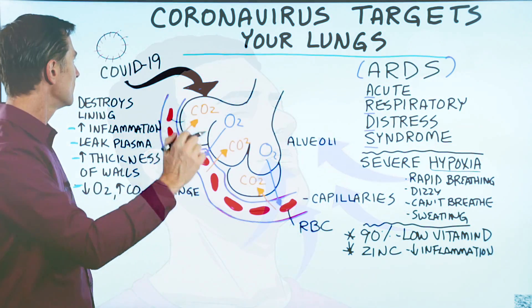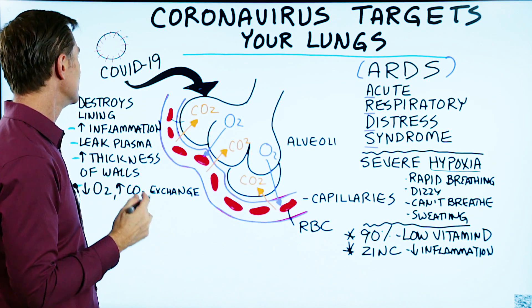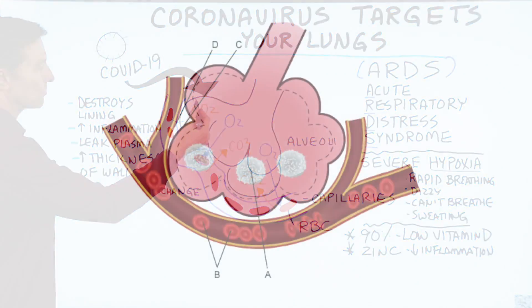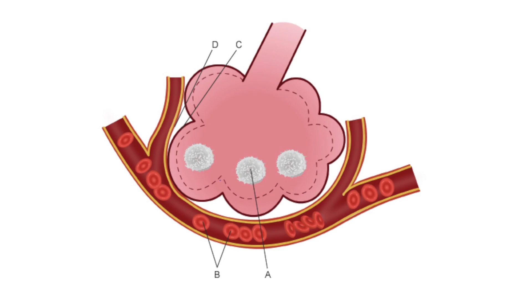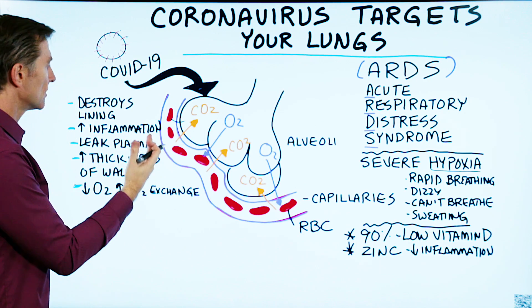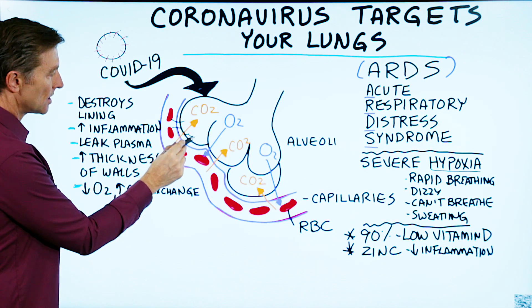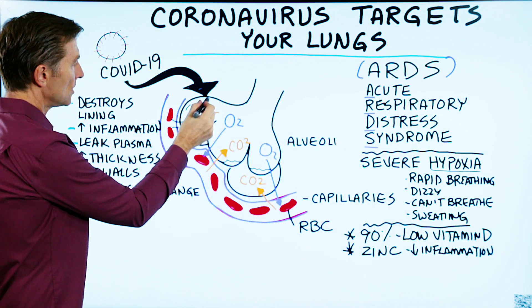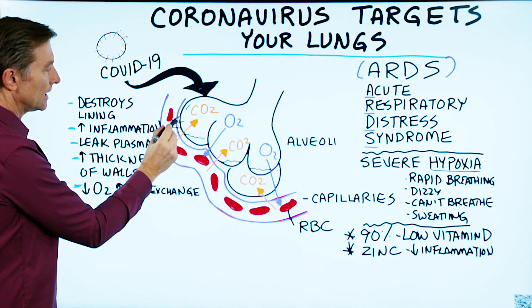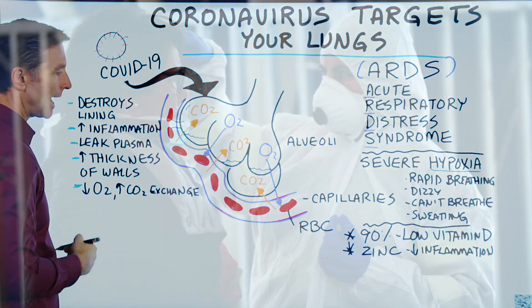But this virus, having affinity for the lung tissue, starts to create damage around the lining and on the capillaries on the other side. There's inflammation that develops, and there's a leak of plasma that starts coming into the lung, so it starts to fill up with fluid. Try to breathe when you have fluid in your lungs — it's almost impossible. Then this wall starts to thicken, and we get less and less exchange of oxygen and CO2 going back and forth.